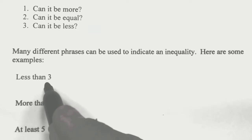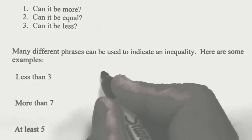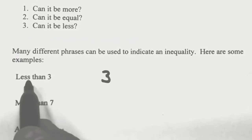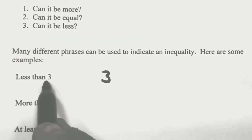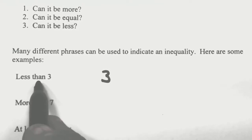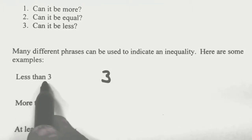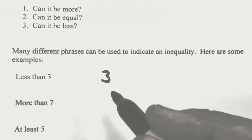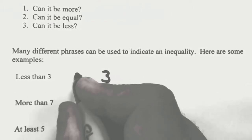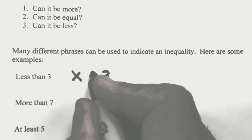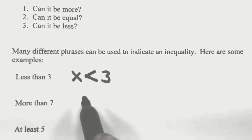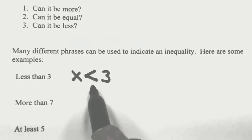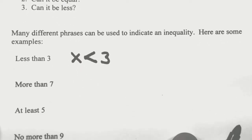For instance, this first one: less than 3. We're referring to 3. Can it be greater than 3? No, we've got to be less. Can it be equal to 3? No, we've got to be less. Can it be less than 3? Yes. So if we were using the variable x, our values have to be less than 3.